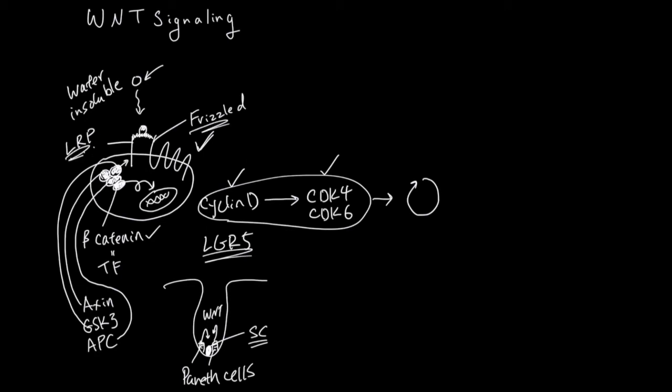Its LRP and Frizzled activate. Activation is going to recruit axin, GSK3, and APC, and these three will release beta-catenin which is going to go to the nucleus to change expression. One of the things that gets activated is LGR5. So this stem cell makes a lot of LGR5.